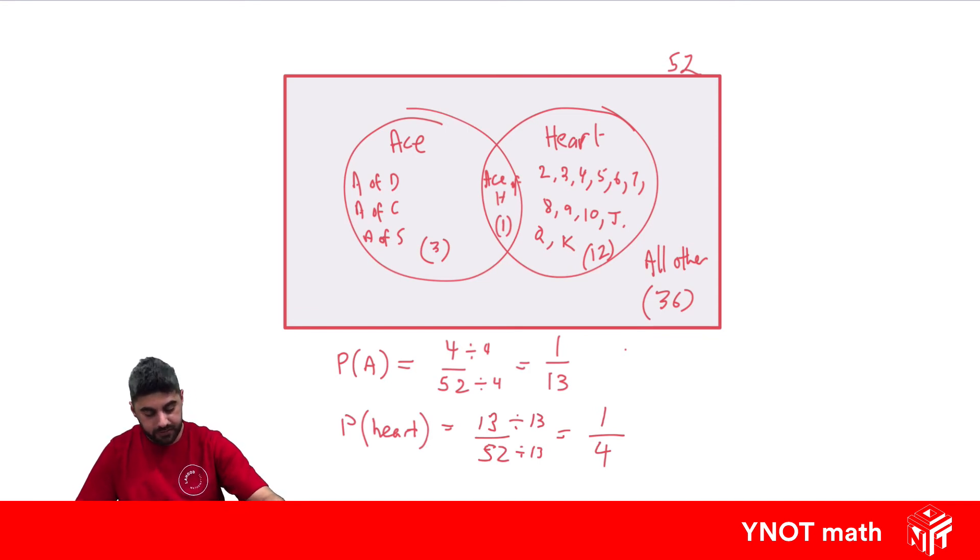What about the probability that the card is not an ace or not a heart? Well, that's over here. Because all of these are aces, all of these are hearts, these are everything else. So that probability is going to be 36 out of 52. These are both divisible by 4 to give us 9 out of 13.